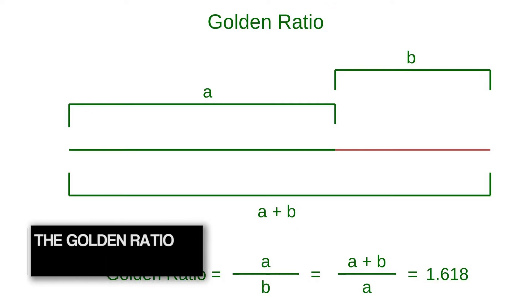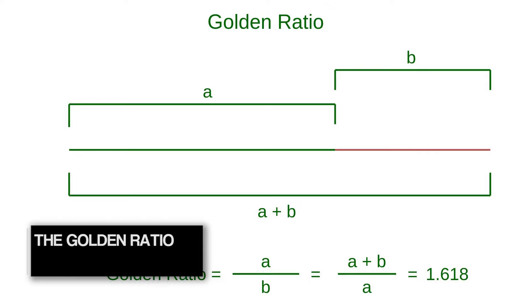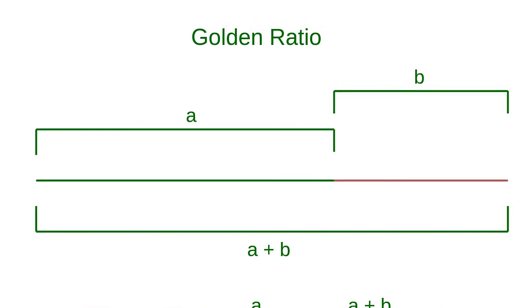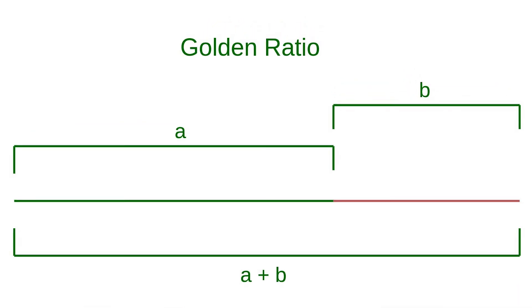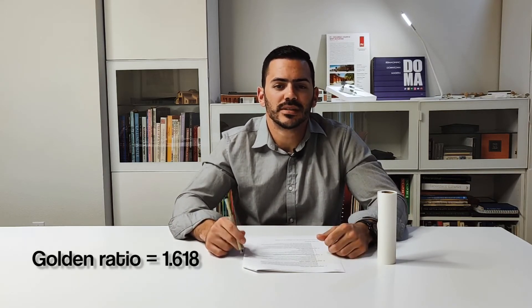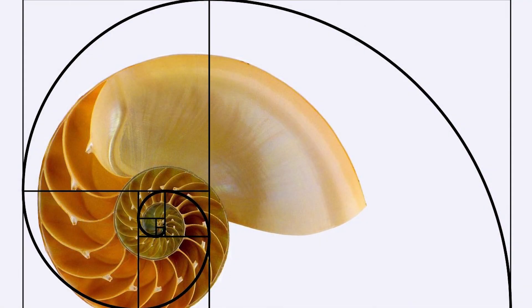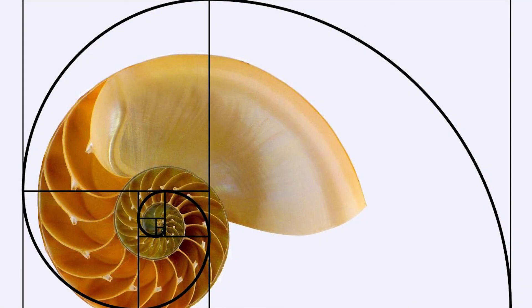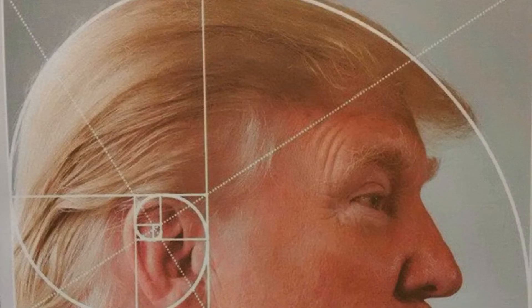The golden ratio is nothing more than a line segment cut into two pieces of different lengths such that the ratio of the whole segment to the longer segment is equal to the ratio of the longer segment to the shorter segment. The simple way to define that is the ratio of the longer line to the shorter line equals 1.618. This proportion and ratio shows up in a lot of places in nature, particularly in snail shells, galaxies, and even memes.